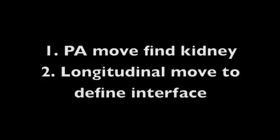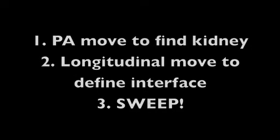To review: first you'll make a PA move to make the kidney look as big as possible. Next, you'll make a longitudinal move to see the entire interface. Then you'll very slowly sweep the entire interface. You might have to do several overlapping sweeps at different positions in the longitudinal plane if you can't see the entire interface in one view because of the rib shadows.